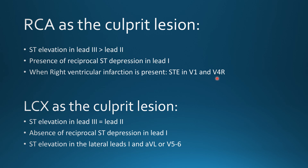In the case of left circumflex, the ST elevation in lead 3 will be equal to lead 2 but not more than lead 2 — in fact, lead 2 elevation can be more than lead 3, which is opposite to the RCA pattern. There will be absence of ST depressions in lead 1, and there will be ST elevations in lateral leads — lead 1, V5, and V6.